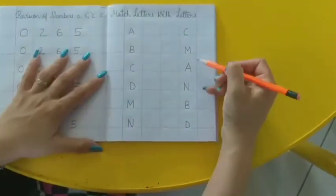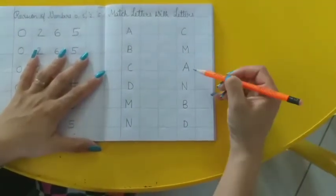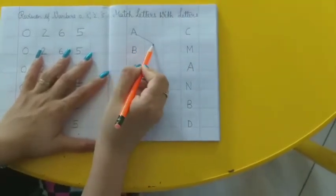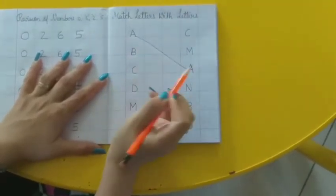This is A. Abhi A kaahan hai ya? Doonndo. Yeh ra. To hum isko aise match karenge, right?